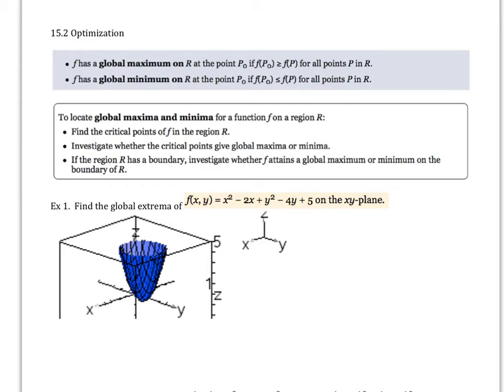Hi, and 15.2, optimization. What we want to do now is look at global maximums and global minimums. If we have a point where the function is always greater than the rest of the function at a particular point, then we have what we call a global maximum. Similarly, we have a global minimum if that point is less than or equal to every other point that we do have.